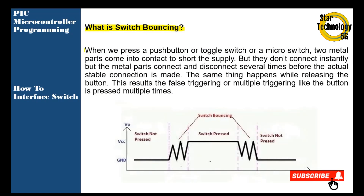What is switch bouncing? When we press a push button, toggle switch, or micro switch, two metal parts come into contact to short the supply, but they don't connect instantly. The metal parts connect and disconnect several times before a stable connection is made. The same thing happens while releasing the button, resulting in the effect of the button being pressed multiple times.